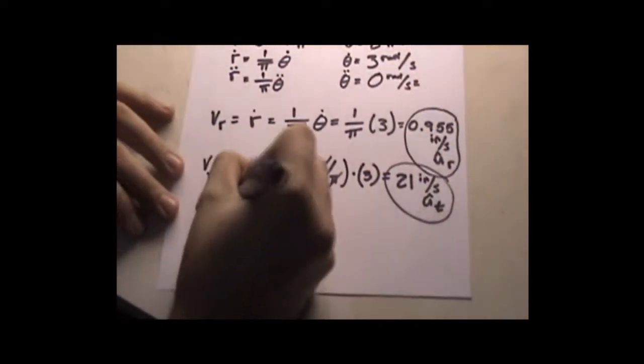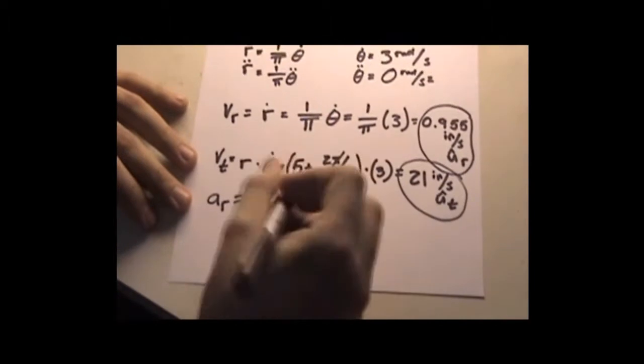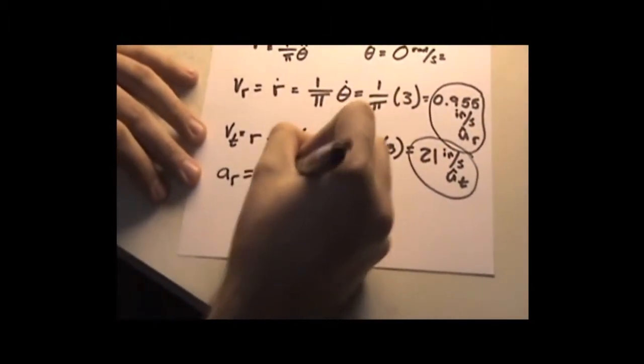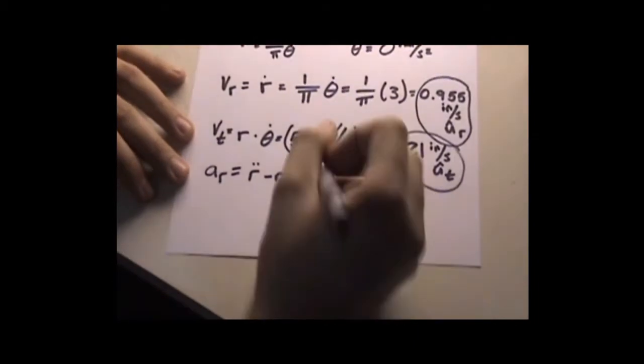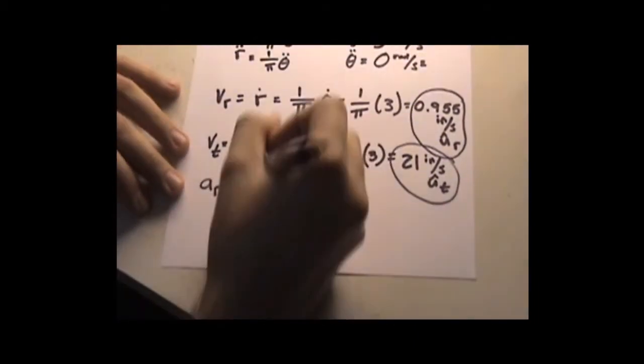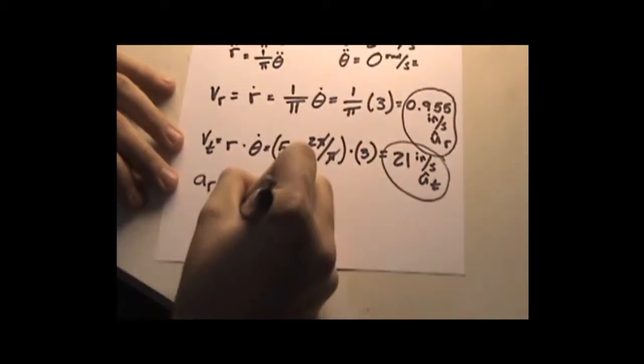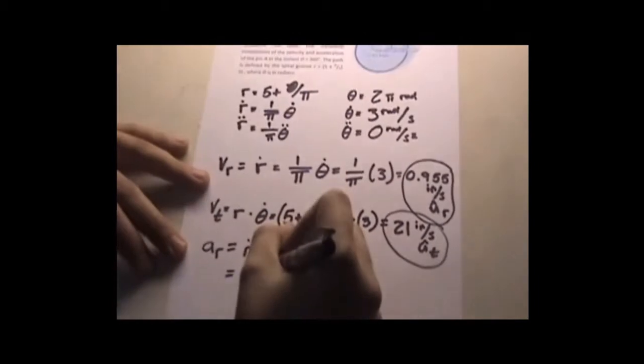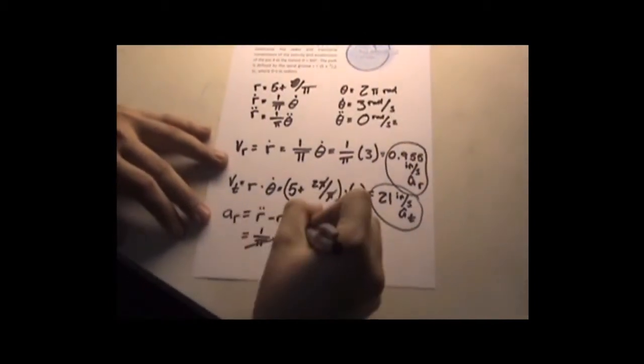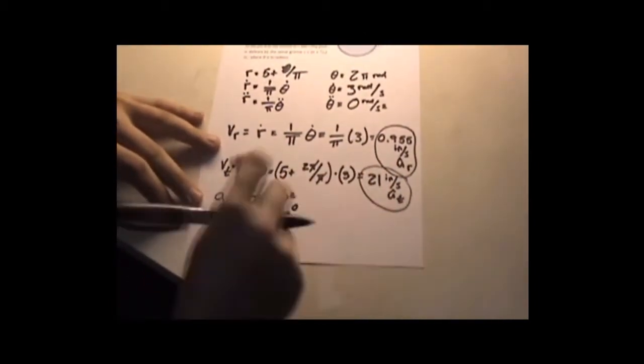Do the same thing for radial acceleration. Radial acceleration equals r̈ minus rθ̇². Substitute that in. You get 1 over π, 1 over π θ̈. Substitute that in at 0 times 0. That cancels out equaling 0.